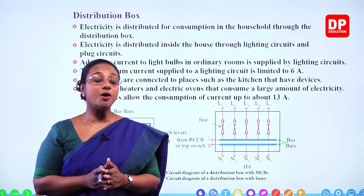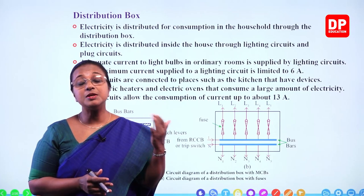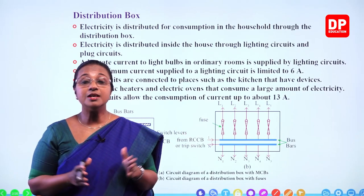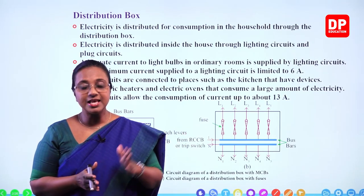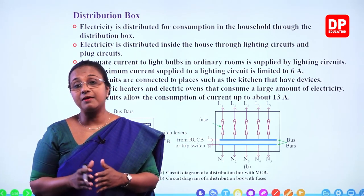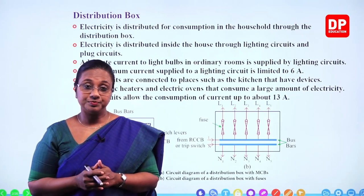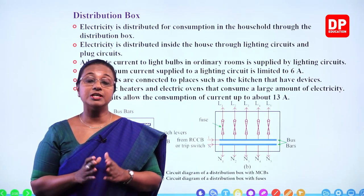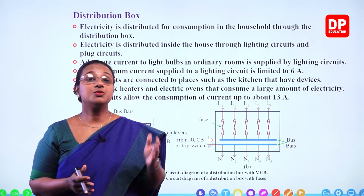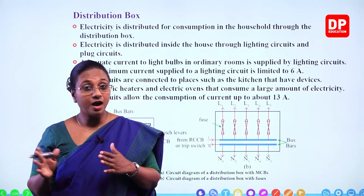Can you all remember the order? Initially, students, we get electricity from the distribution wire. That is from the national grid — current is supplied to the distribution subcentres, and from the distribution subcentres, through the distribution wire, we get power to the household. Then from there, through the supply cable, current is given to the first component: the overload circuit breaker, or what we call the service fuse.